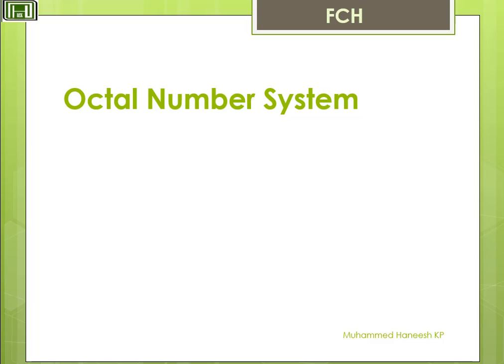In the Octal number system the base is 8. So in this system there are only 8 symbols or digits: 0, 1, 2, 3, 4, 5, 6, and 7. Here also the largest single digit is 7, one less than the base.